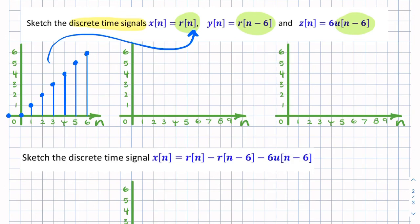So that's our unit ramp, the first signal. The second signal is a unit ramp, but it's shifted by six samples, or six units of time. So we want the value of n where that argument equals zero. So n equals six.